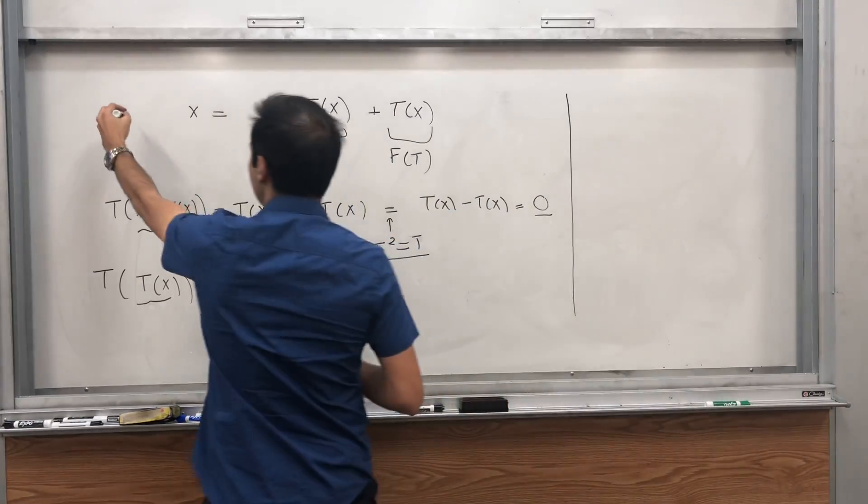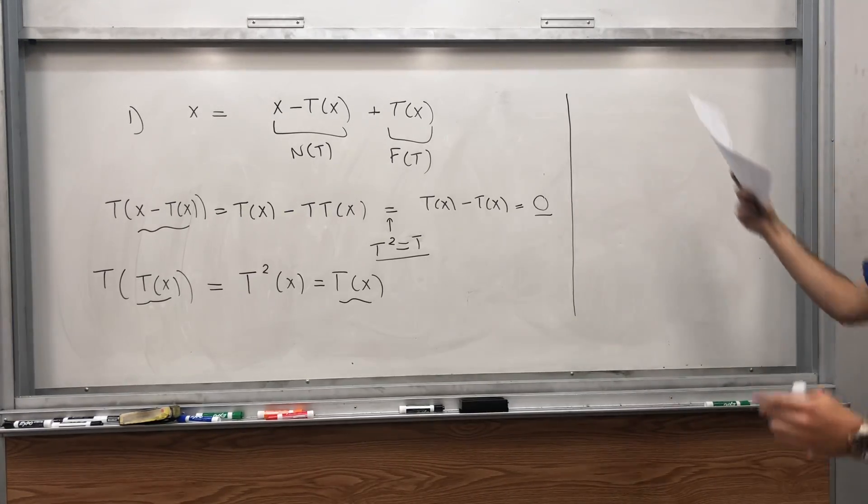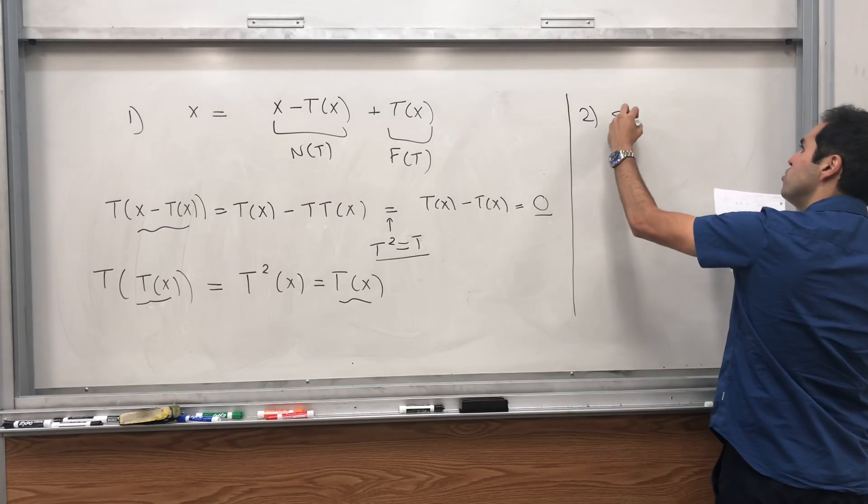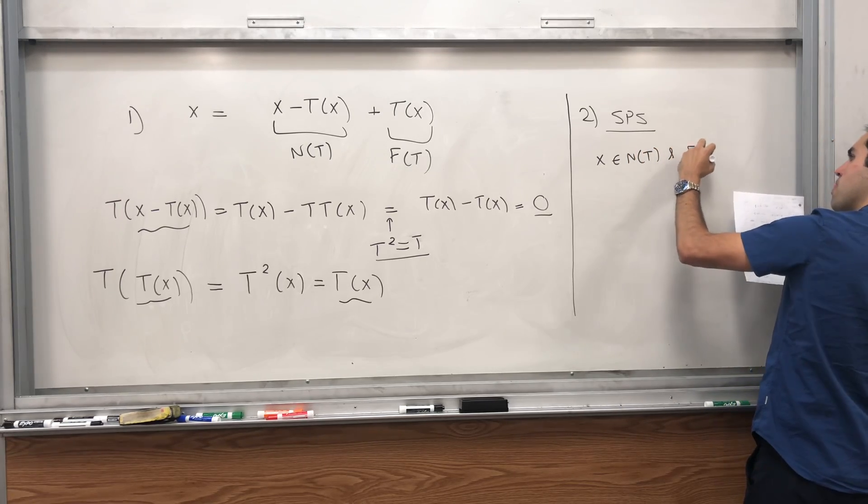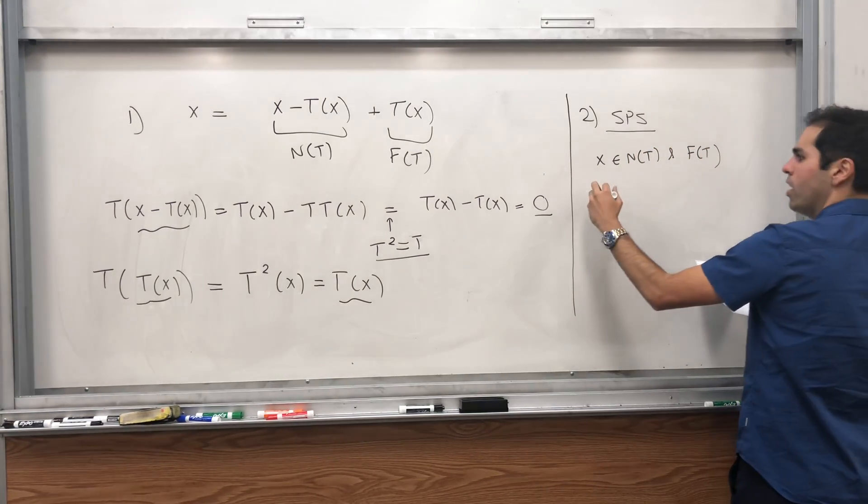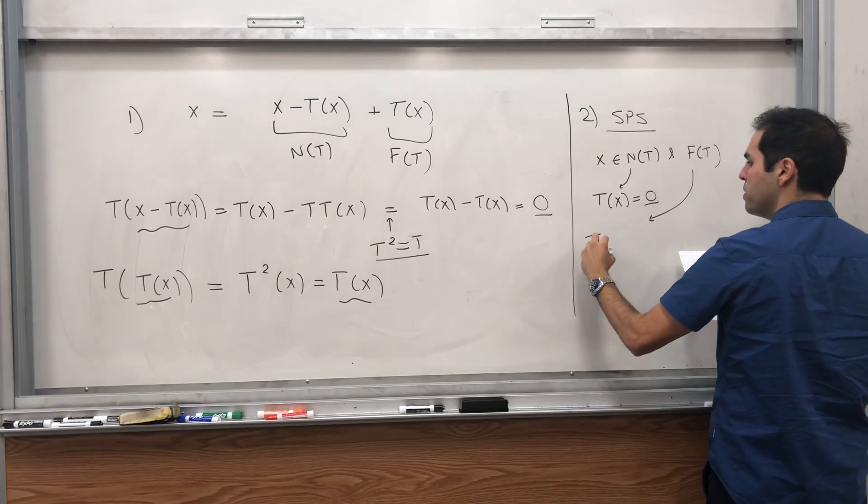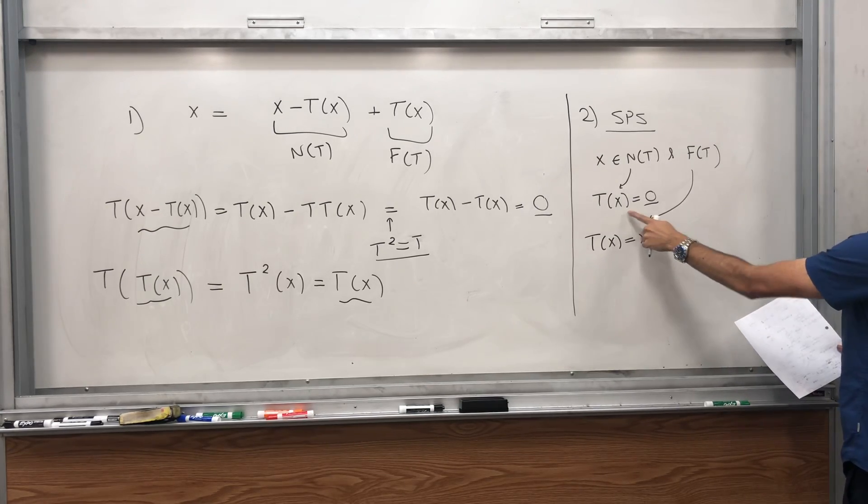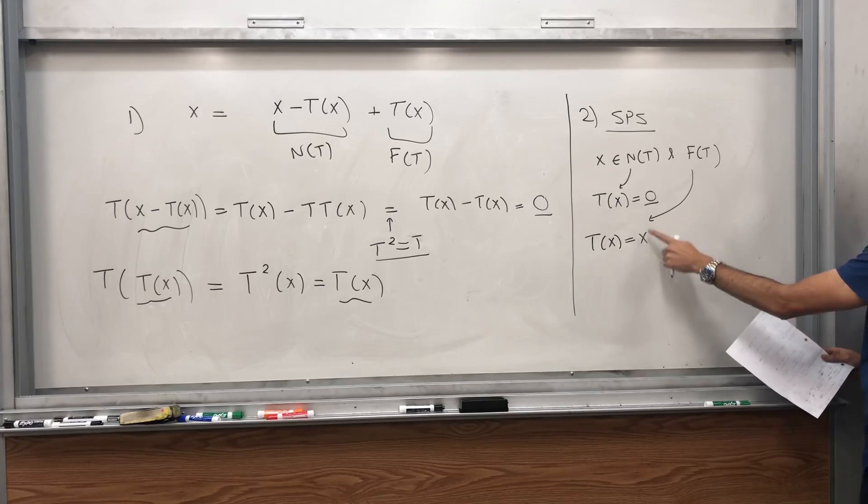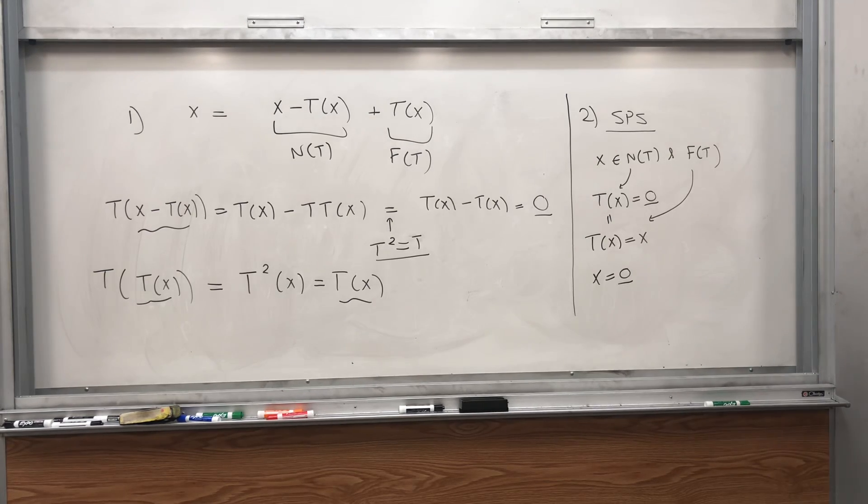Okay, so that was the first part. You see, you wrote any vector in V as the sum of those two vectors. And lastly, we need to show that those two vectors have a trivial intersection. So suppose x is in both the null space and a fixed point. Then, on the one hand, T(x) equals zero, because it's in the null space. On the other hand, because it's a fixed point, T(x) equals x. So what do we know about T(x)? It's both zero and equal to x. So x equals zero.